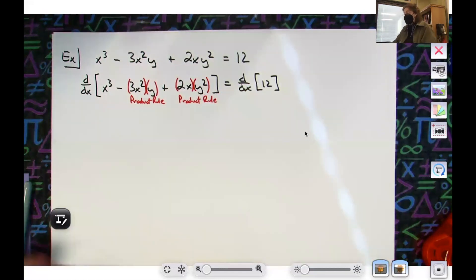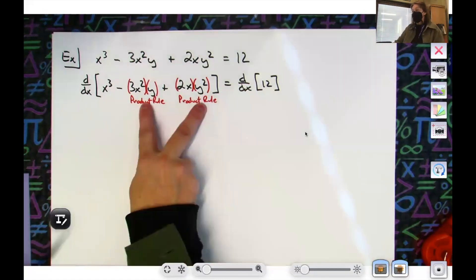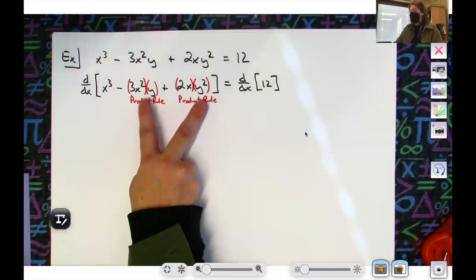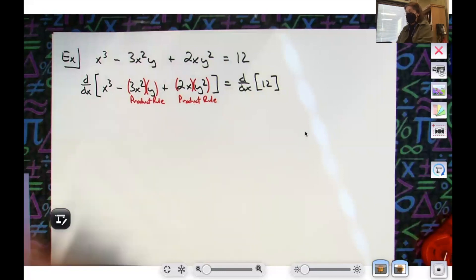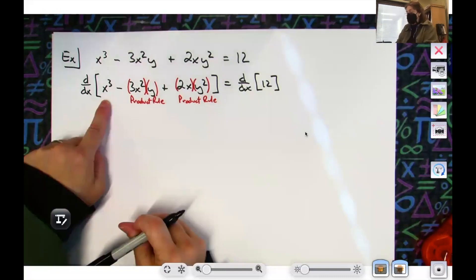All right, and do both of those require chain? Because they have y's, right? If it has a y in there when I take the derivative, I've got to put chain in. No chain here, okay? So first term, that one, just nice little 3x².